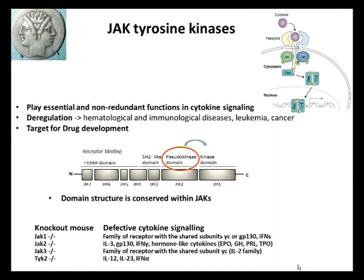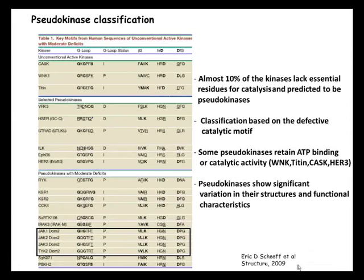The kinase domain is also called JH1, standing for JAK homology 1, and adjacent to that is the pseudokinase domain or JH2. The function of the pseudokinase domain has been pretty much unknown, though it has been shown to be involved in regulation of JAK kinases. Interestingly, almost 10% of all kinases lack essential residues for catalysis and are predicted to be pseudokinases.